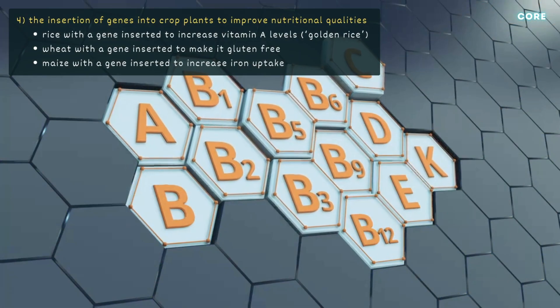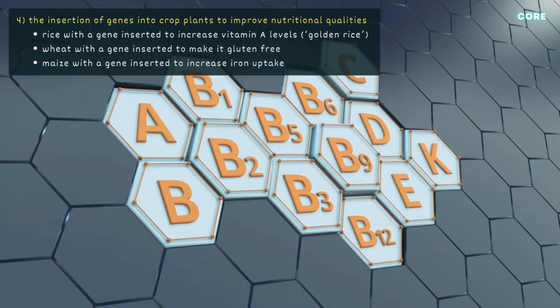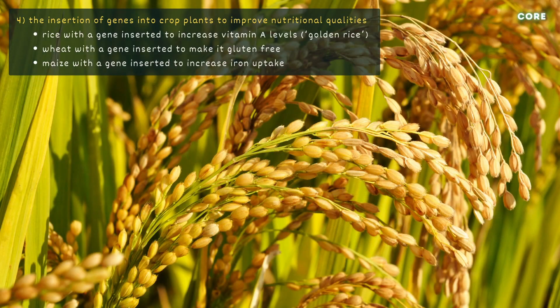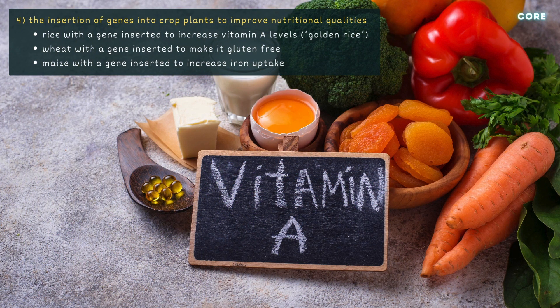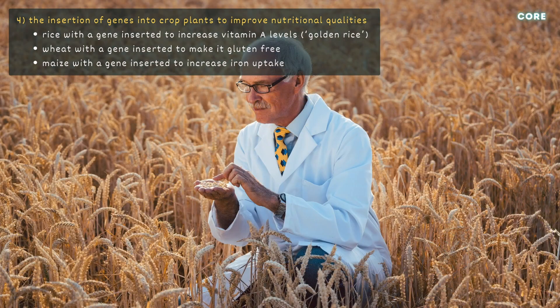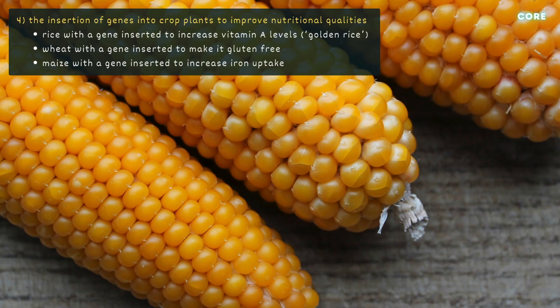Finally, genes are inserted into crop plants to improve nutritional qualities. A good example is golden rice, a variety of rice genetically modified to produce a substance which is converted to vitamin A when metabolized by humans. Vitamin A is necessary for healthy vision and immune function, so golden rice could benefit populations who don't get enough of the vitamin in their diets. Other examples include wheat with a gene inserted to make it gluten-free and maize with a gene inserted to increase iron uptake.